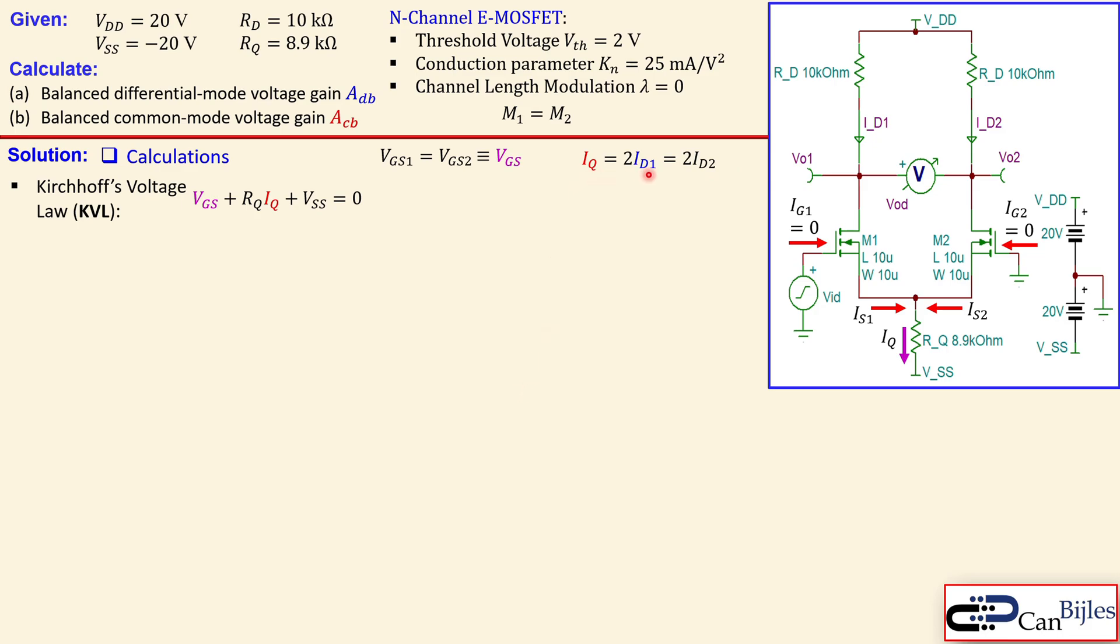We can now set up an equation for the drain current, doesn't matter M1 or M2, assuming the saturation region of operation. ID1 is given by this expression with the conduction parameter, the gate-to-source voltage, and the threshold voltage squared. This is only valid with saturation region and channel length modulation zero. Taking this together with ID1 and two times that will be IQ, we substitute in here. Let's substitute the values: we have RQ, we have KN, we have the threshold voltage, and VSS is minus 20. These three parameters as a product give you 445, and this minus 20 placed to the right side will be plus 20. We have an expression we can solve using a solver.